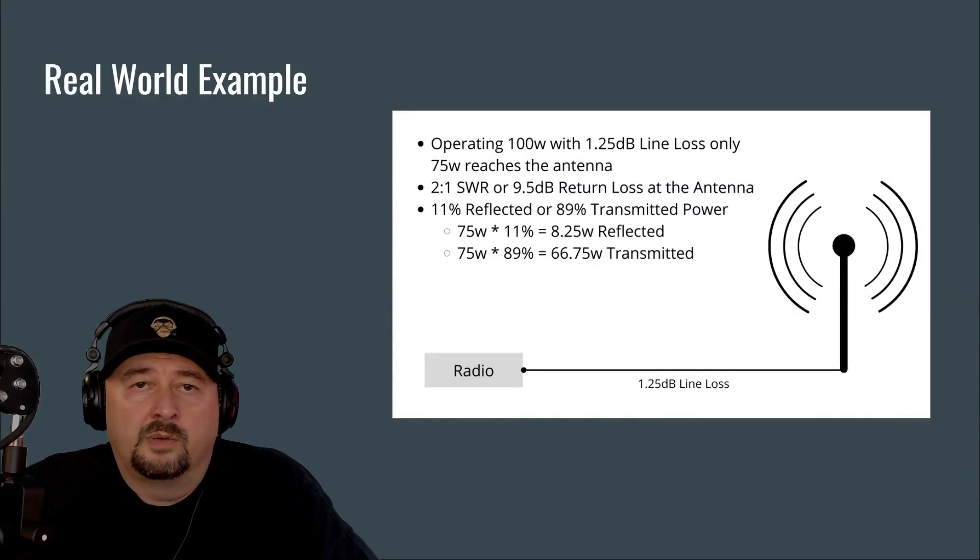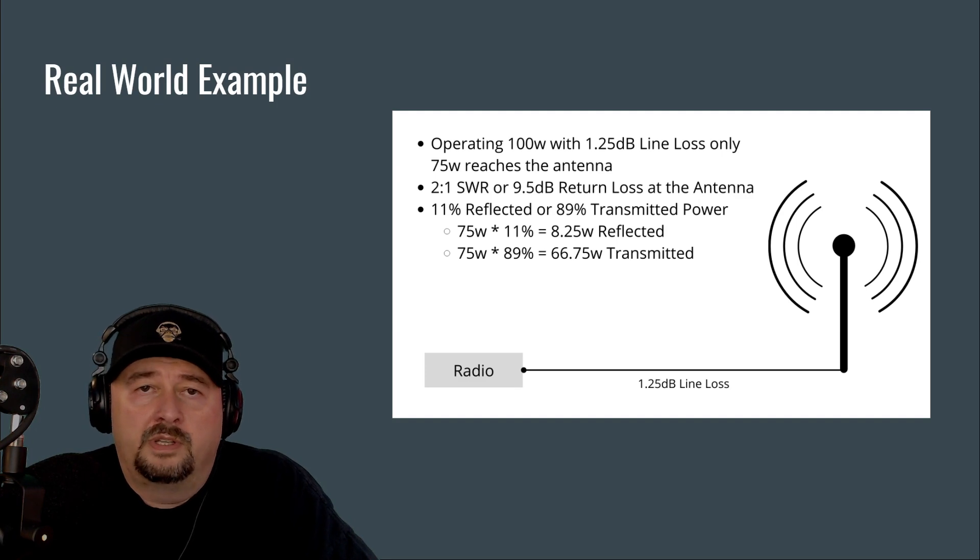So let's talk a little bit more about a real world example. Here we're operating with 100 watts on the transmission line, which is 1.25 dB in line loss. Only 75 watts will reach our antenna. Our antenna SWR of 2 to 1 does not change, and neither does the return loss of 9.5 dB. So this means we have 11% of our power reflected and 89% transmitted. But only 75 watts reaches our antenna because of our line loss. This really means that 8.25 watts is reflected and 66.7 watts is transmitted. Now you can see as a ham radio operator, I might be sitting in my shack thinking I'm pushing 100 watts. In reality, I'm pushing 66.75. And to me, that's a little concerning.